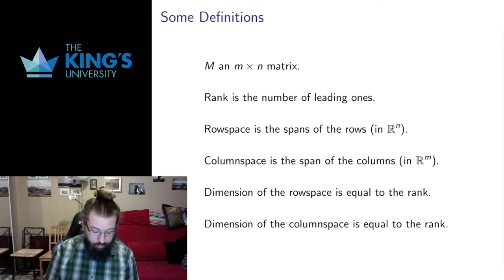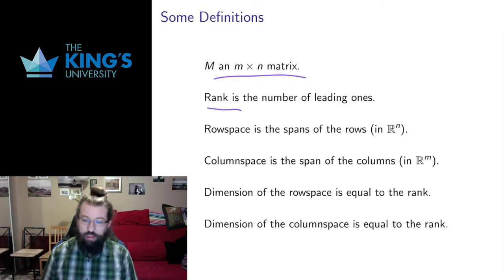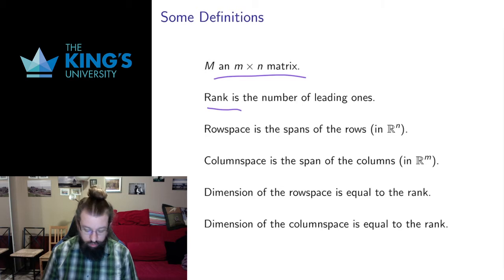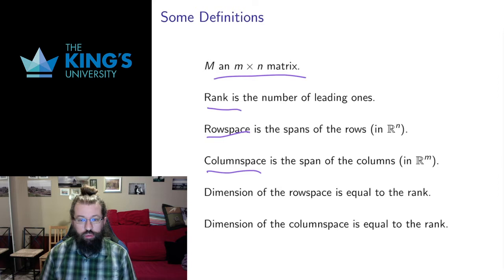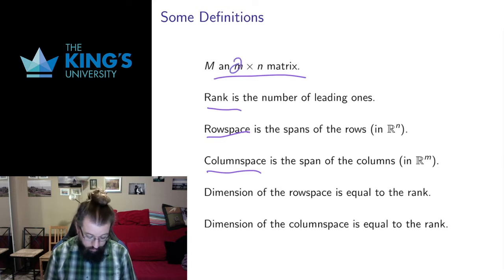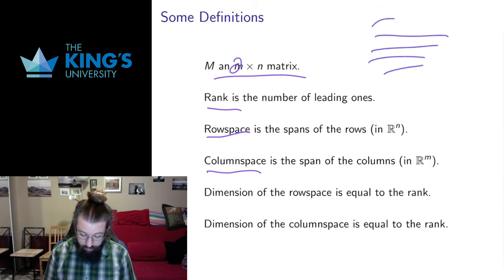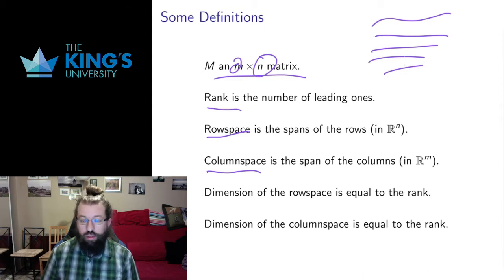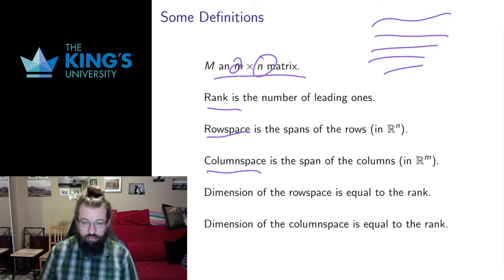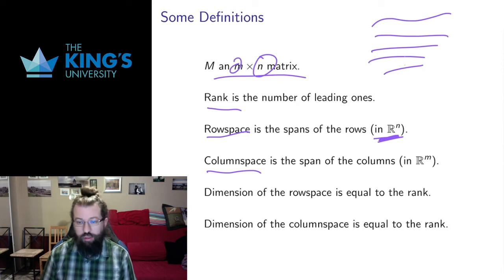If I have an m by n matrix, let me remind you that rank is the number of leading ones in its reduced row echelon form. I can think of the rows of the matrix — those rows are vectors in Rn. We have m rows, but their length is the number of columns, which is n, so they have n coefficients and are vectors in Rn. I can look at their span and get some linear subspace in Rn.